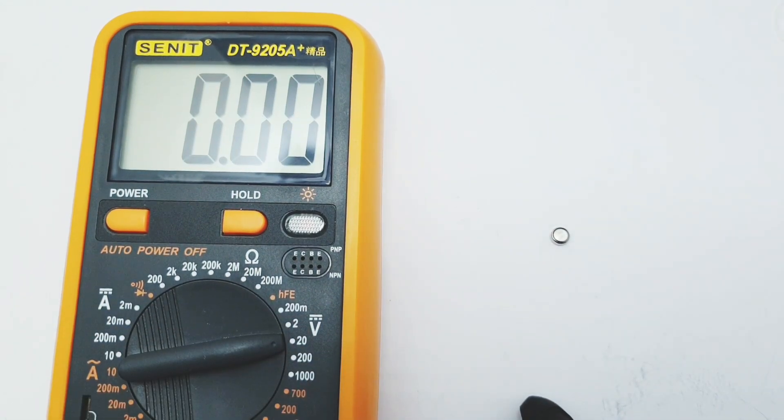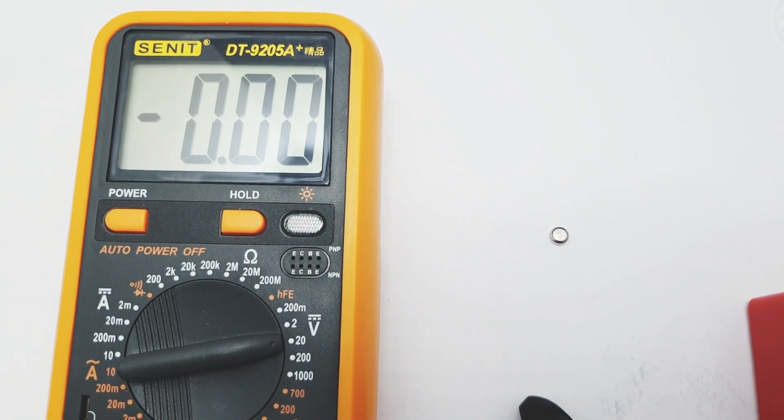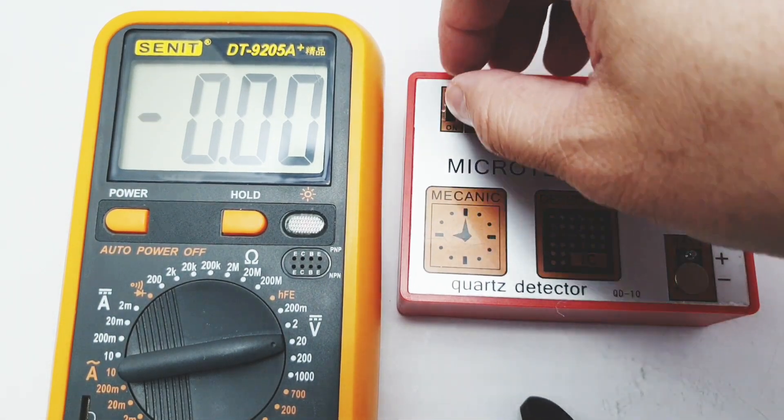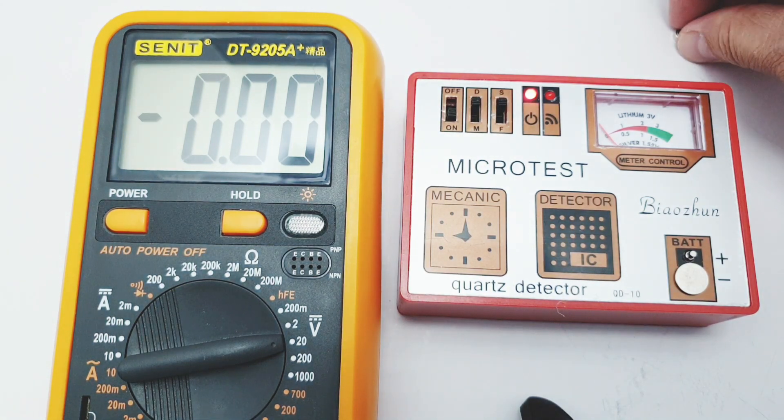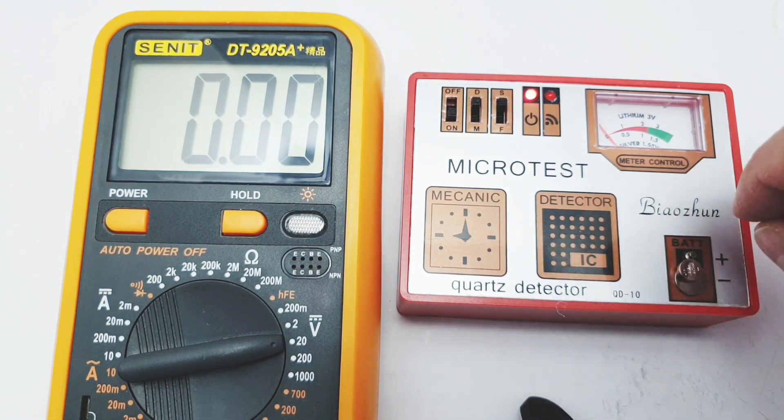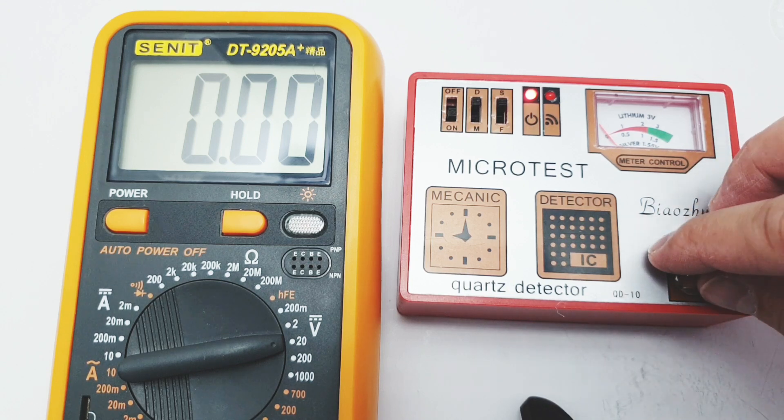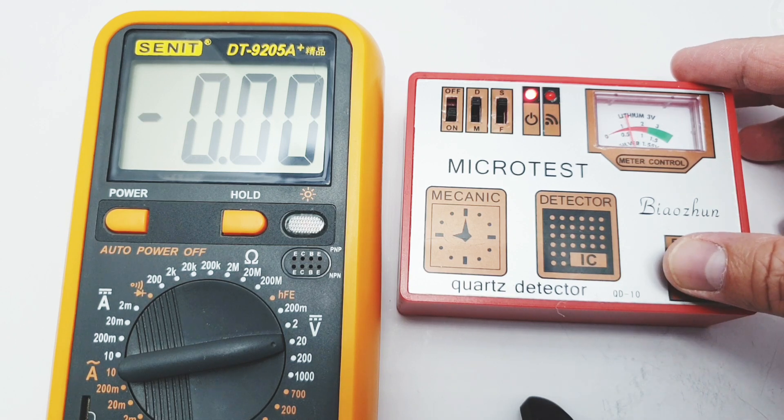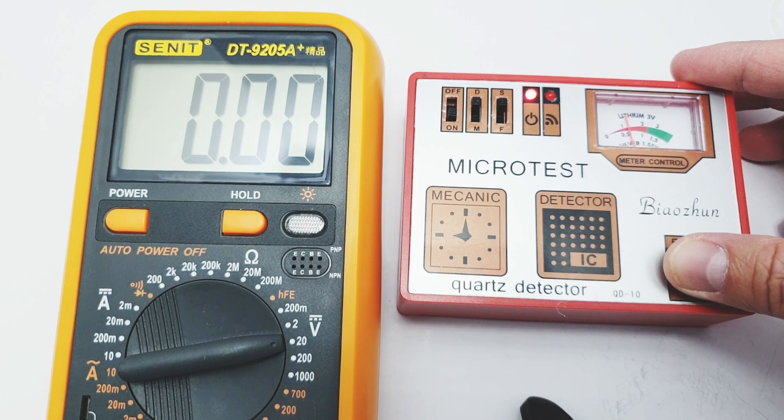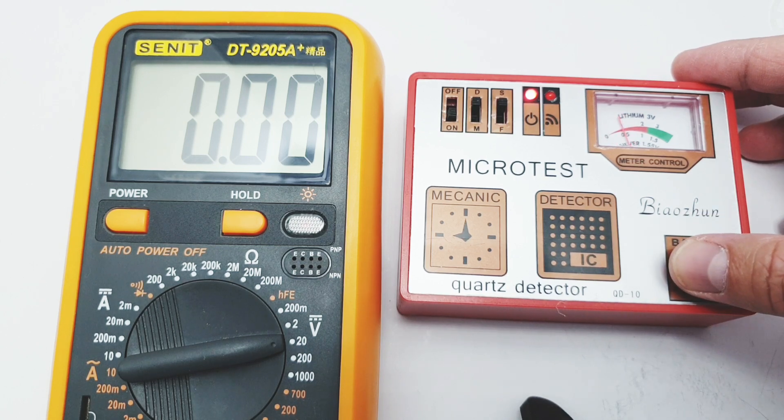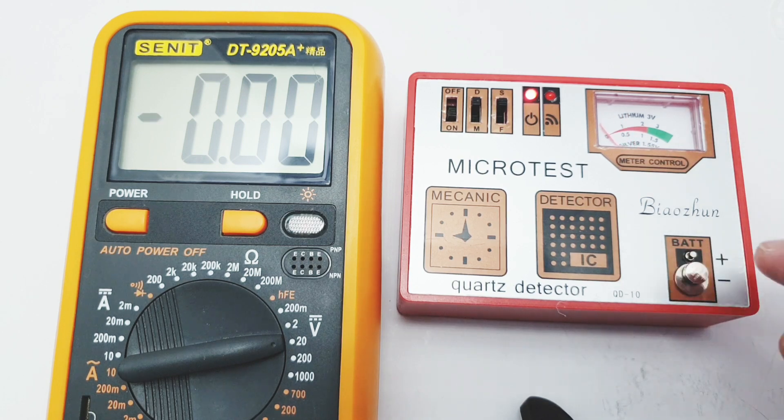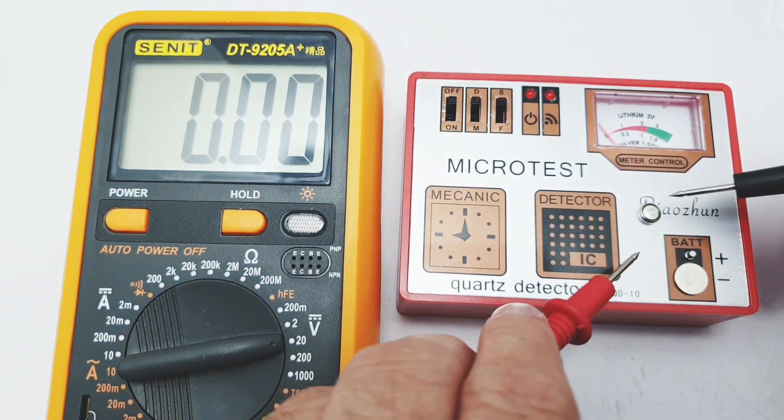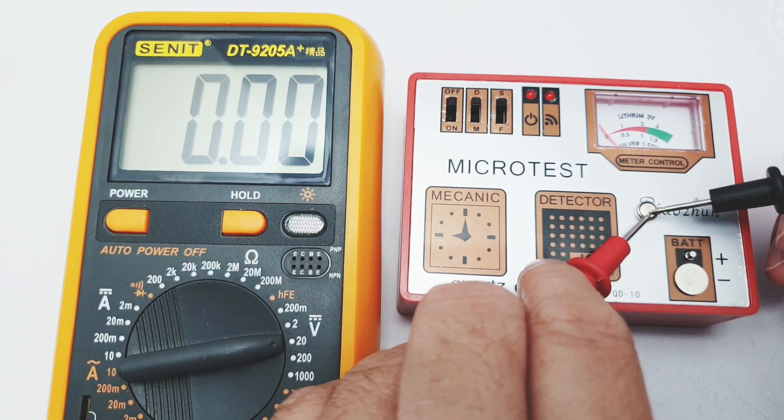Now let's set this aside and use the Microtest tester. Switch it on for the battery tester function and put the button cell on the terminals. Now let's measure the voltage from the Microtest. There is more than one volt, it means it's somewhere in 1.2 or 1.3 so it's still okay and it's pretty accurate based on the reading with our multimeter.